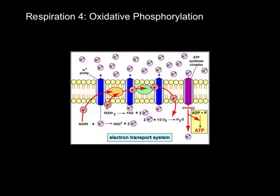The energy released by electrons flowing through the electron transport chain is used to transport protons across the inner mitochondrial membrane. This process is called chemiosmosis. And that will be all for my respiration standards.